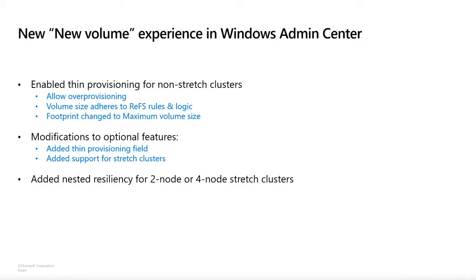In the previous slide I mentioned that you can do all provisioning in Windows Admin Center. For people who have tried this out, you may have noticed you can only set this at the pool level and can't actually do this at the volume level. I have received multiple bugs saying you can't over-provision in Windows Admin Center yet — that's where the new volume experience comes in. It's something we're actively working on and you should expect to see it later this fall. The primary change is that you can enable thin provisioning at the volume level, selecting fixed or thin when you create the volume. We've also added extra guidelines on volume size to better adhere to ReFS's rules, and we've changed the footprint parameter to maximum volume size instead.